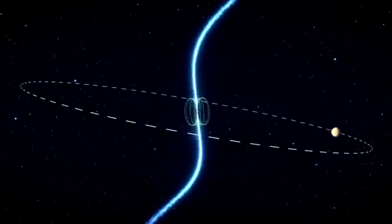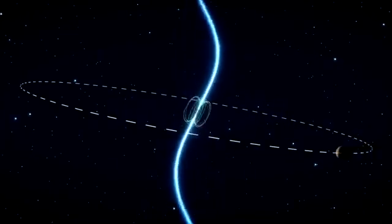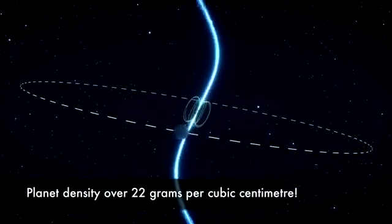The motion of the pulsar told us that the companion only weighed about as much as Jupiter and is incredibly dense, similar to that of platinum.